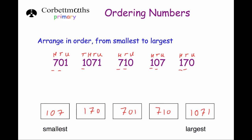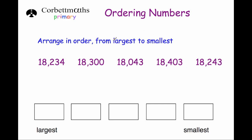Finally, let's look at a harder question. This one asks us to arrange in order from largest to smallest: 18234, 18300, 18043, 18403, and 18243. If we look at them all, they all have 18000, so that's not going to help us distinguish which is biggest or smallest.